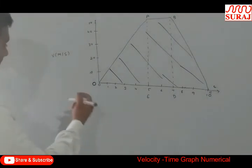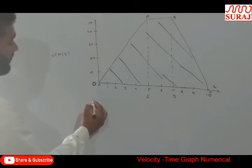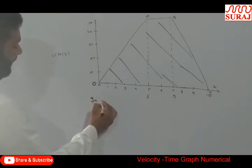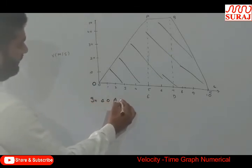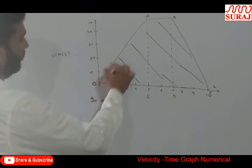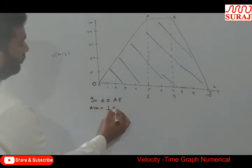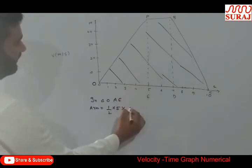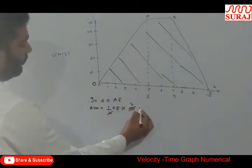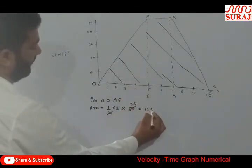Let me check it. Here is triangle OAE. This is the triangle OAE. Area is equal to 1 by 2 into base 5 into height 50. So 125 meters.